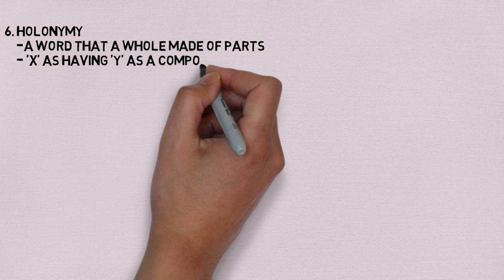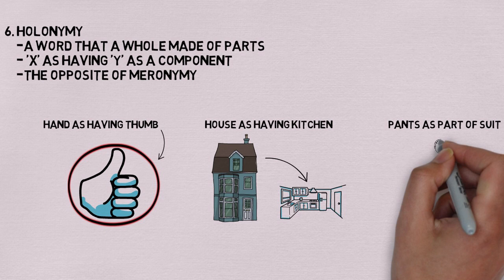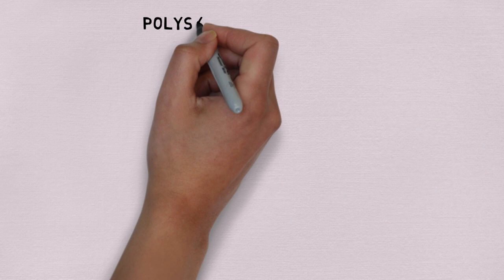Our sixth lexical relation is that of holonymy. Holonymy is the opposite of meronymy and denotes something that is a whole made up of some part, or having something as a component. A hand is a holonym of thumb. A house is a holonym of kitchen. And a suit is a holonym of pants.